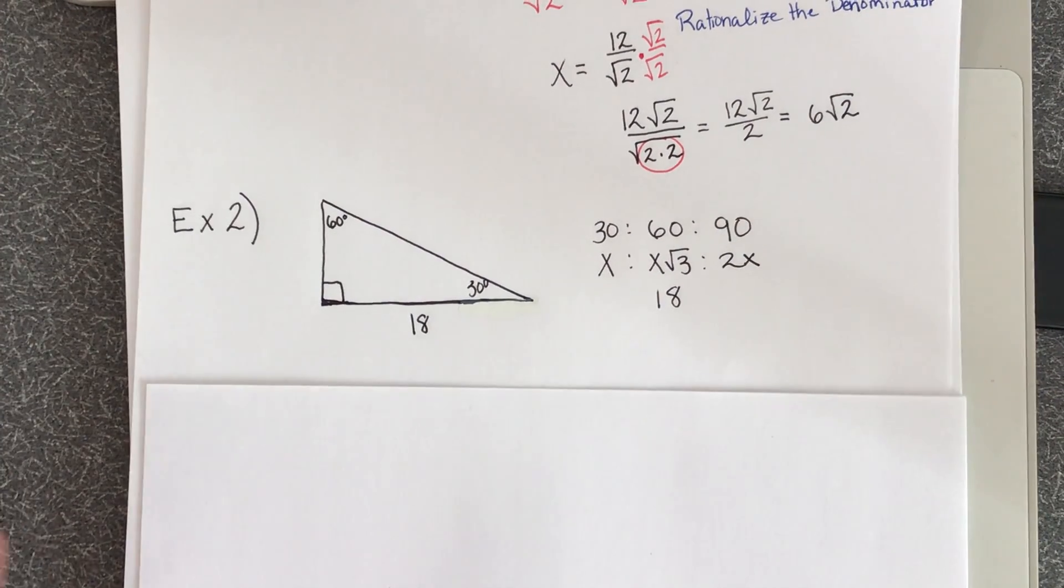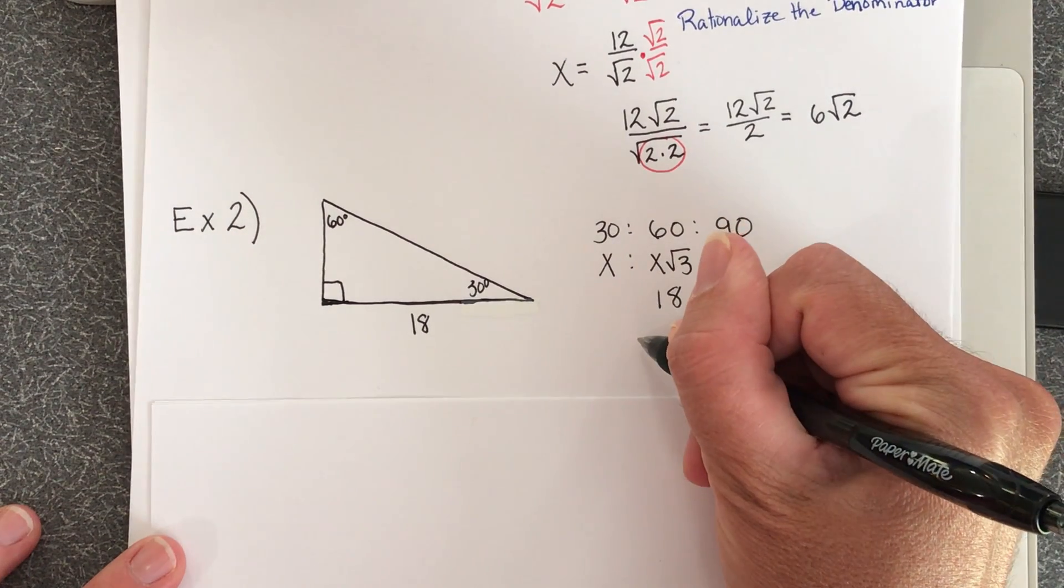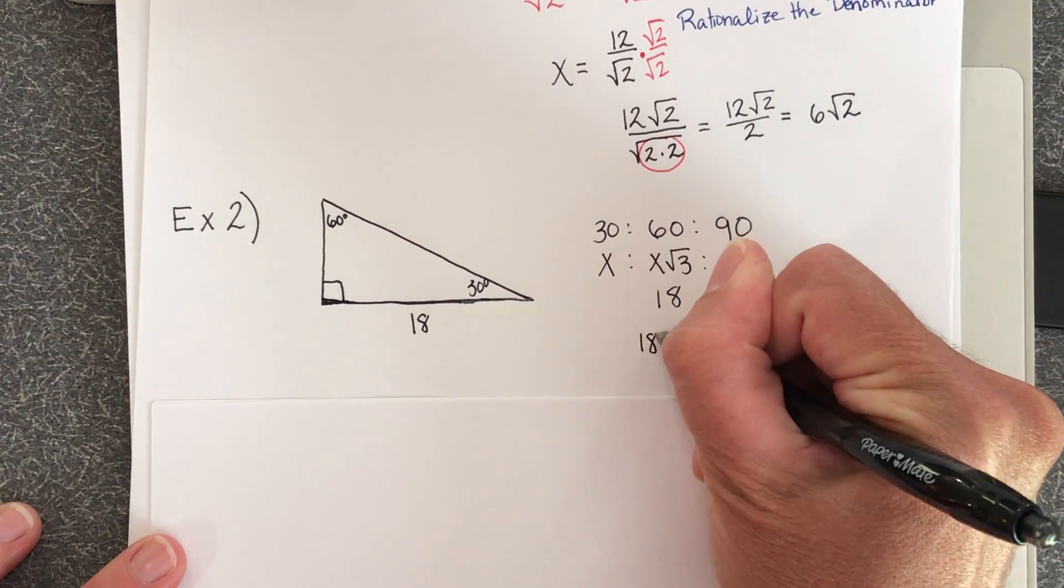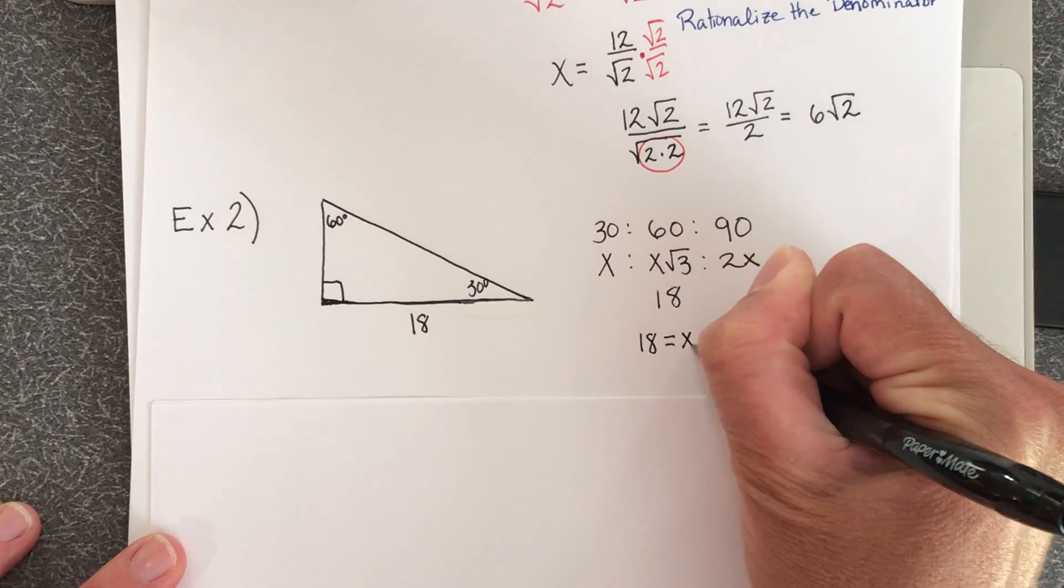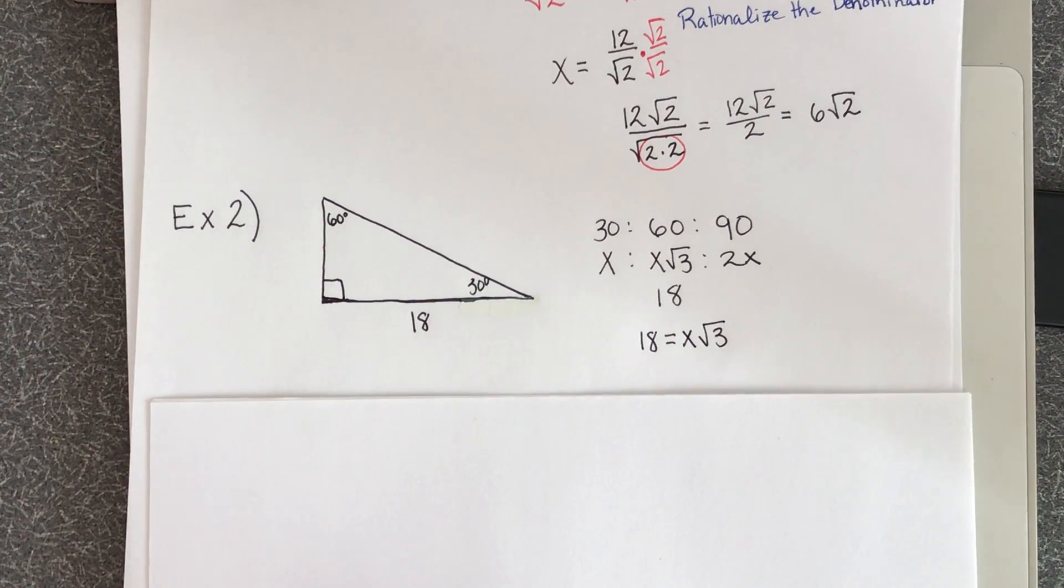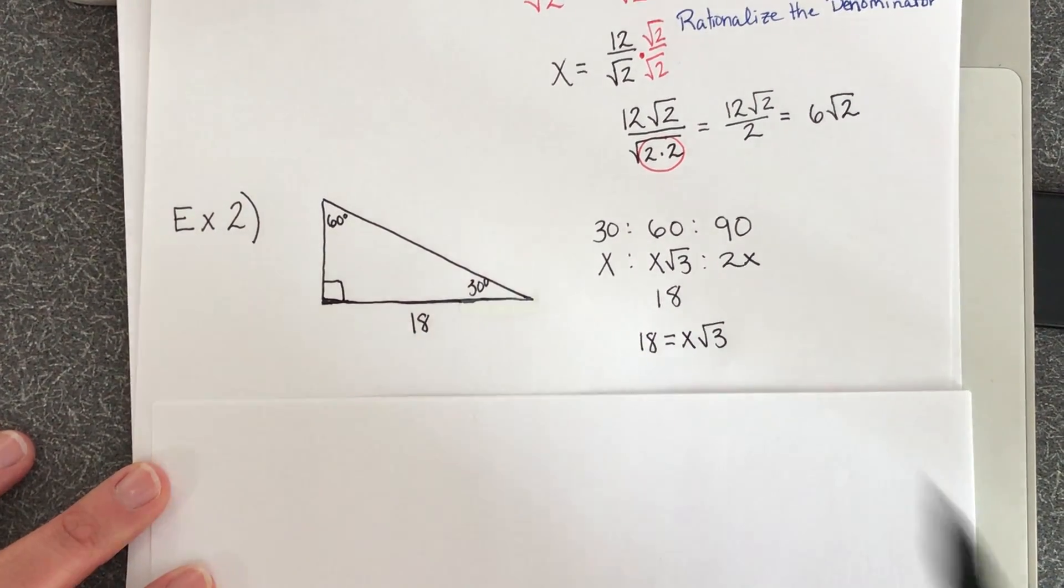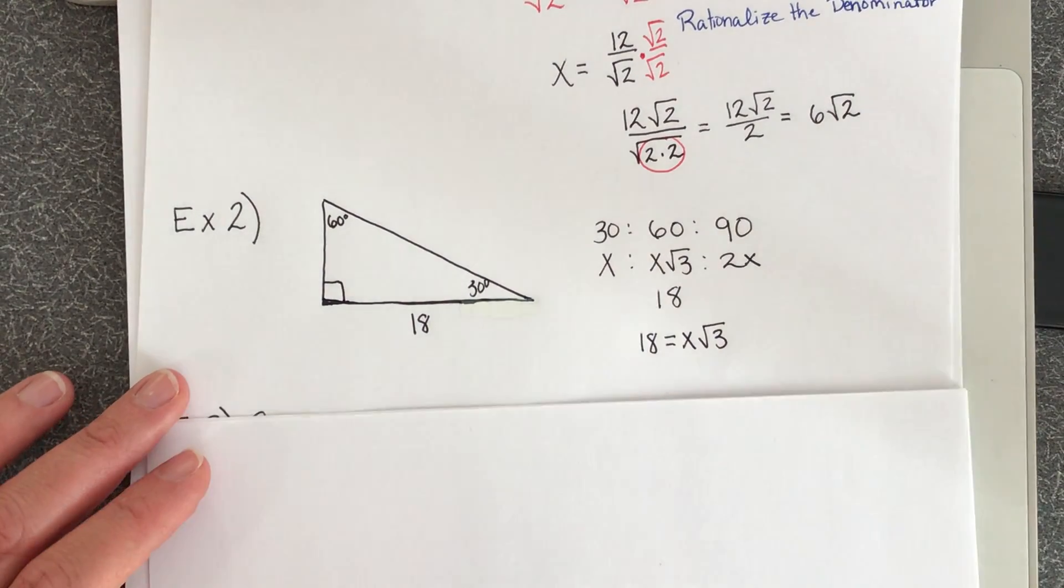So now I'm going to set up my equation to figure out what is x. So 18 is equal to x times the square root of 3. Now, as we learned a minute ago, this is multiplication. To undo multiplication, we're going to use division.